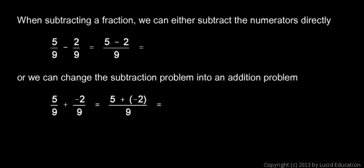When subtracting a fraction, we can either subtract the numerators directly, like we see here. 5 ninths minus 2 ninths, and we just take the numerators and subtract, 5 minus 2 over 9. And 5 minus 2 is 3, so that's the same as saying 3 over 9.